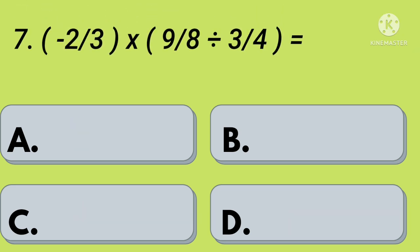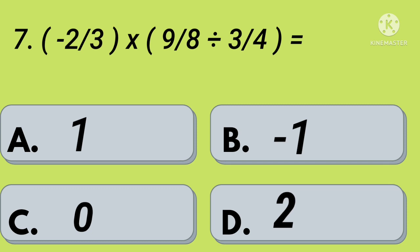Seventh question: minus 2 by 3 into 9 by 8 divided by 3 by 4 equals — option A: 1, option B: minus 1, option C: 0, option D: 2. Your time starts now. Right, option B: minus 1.